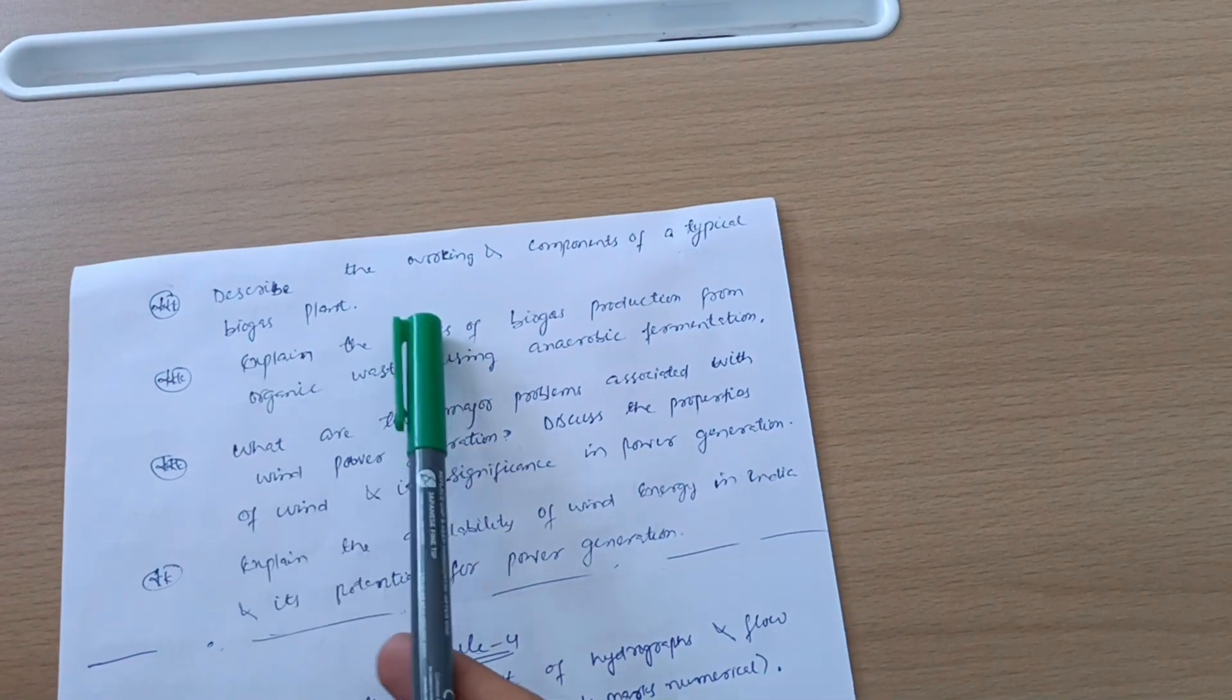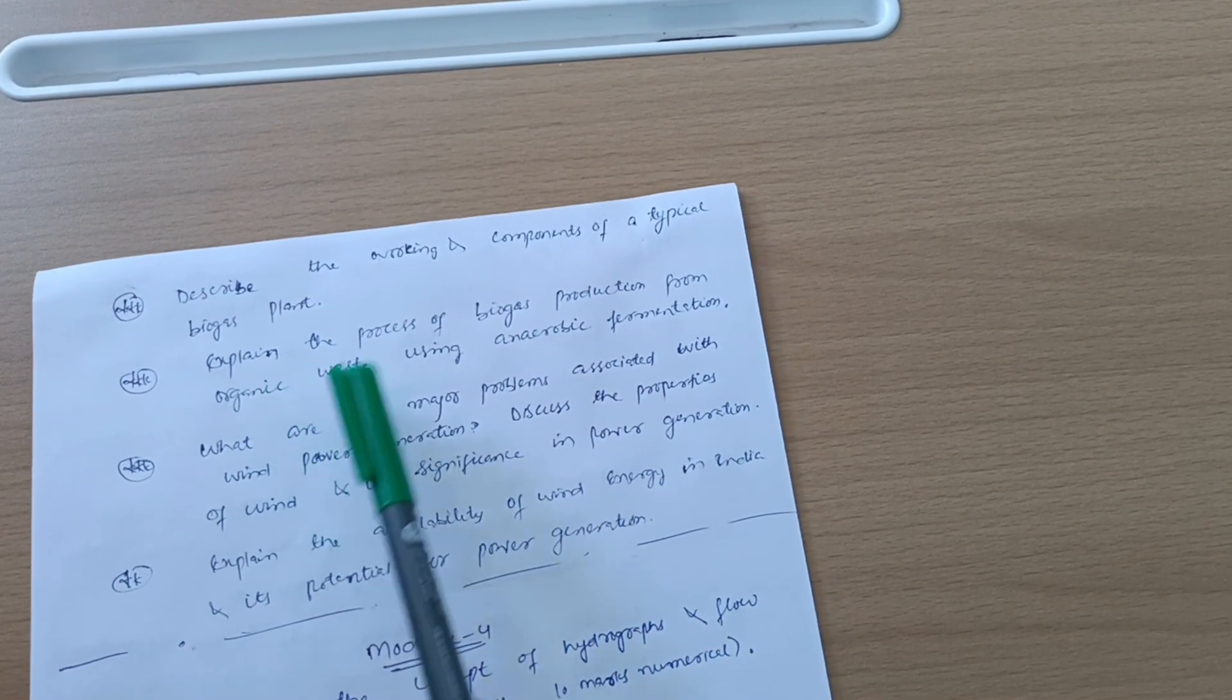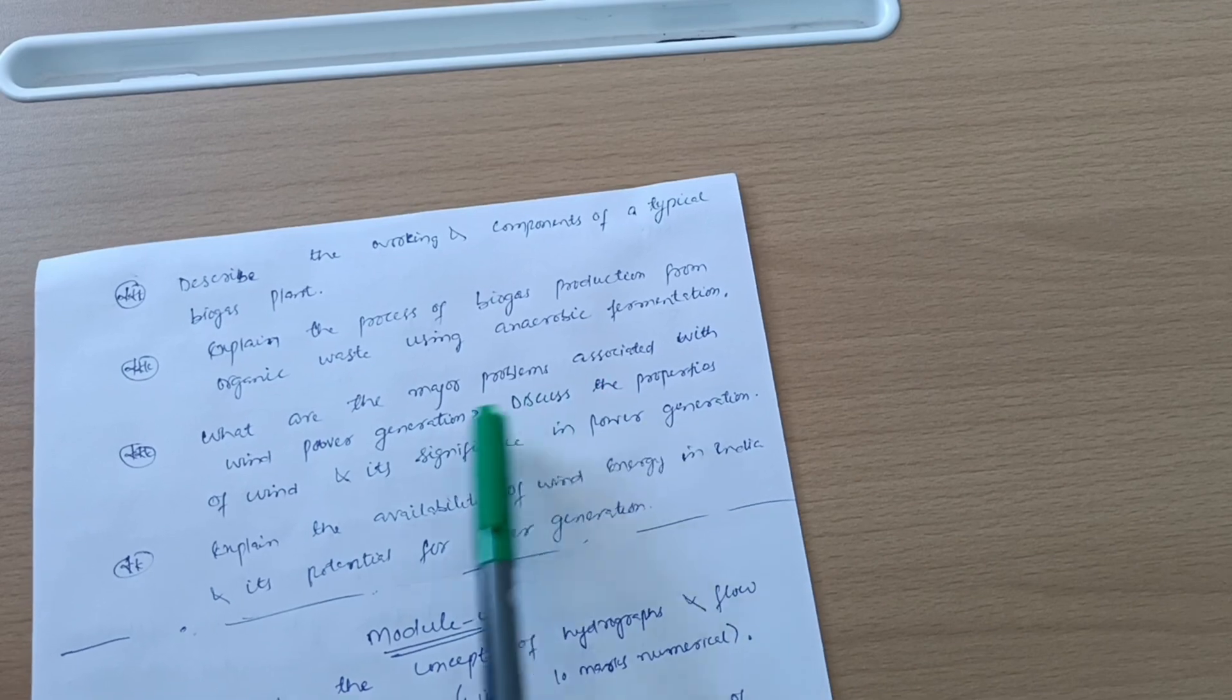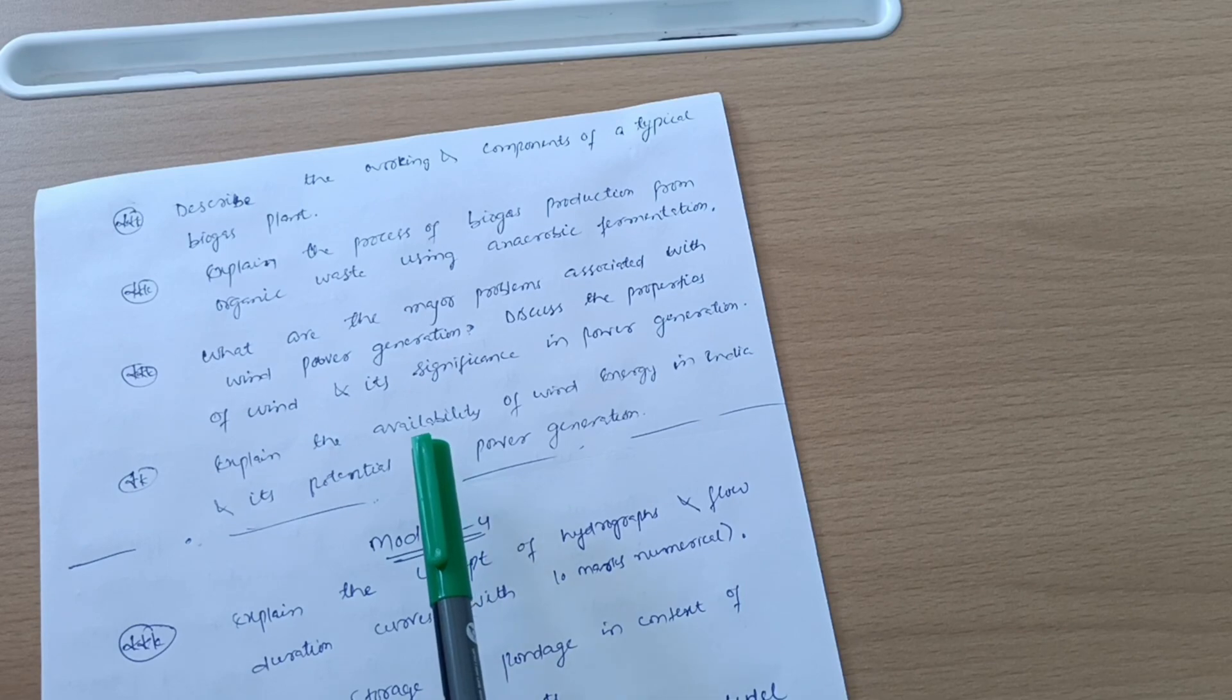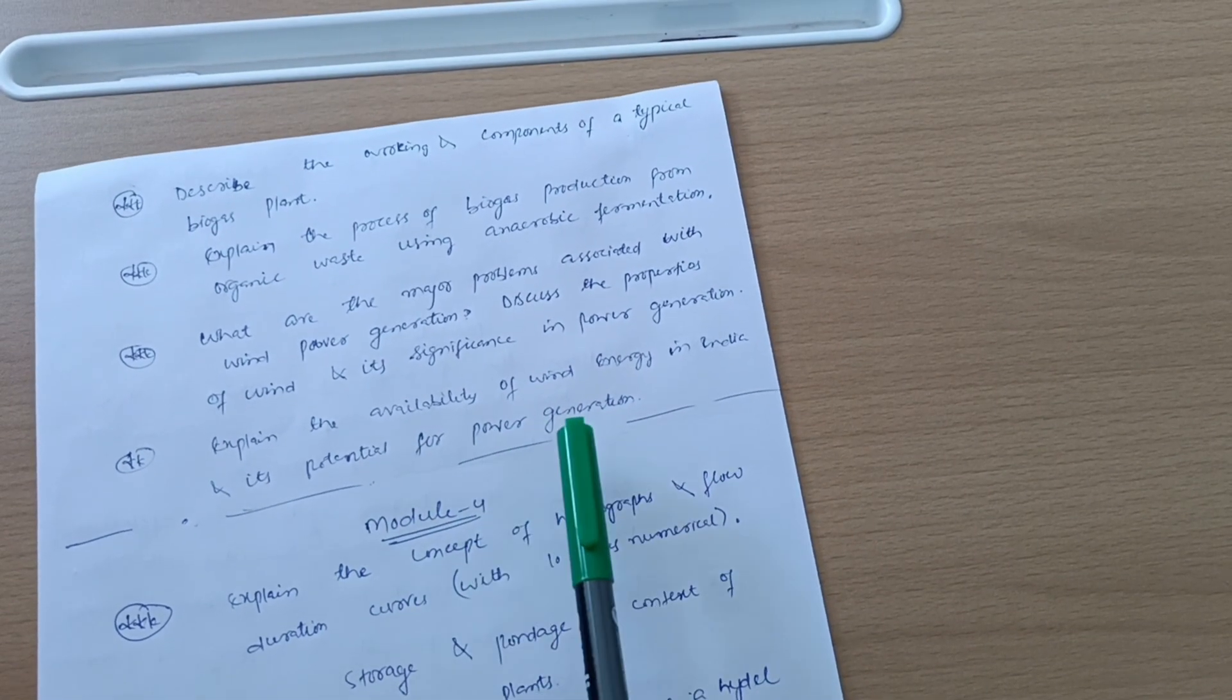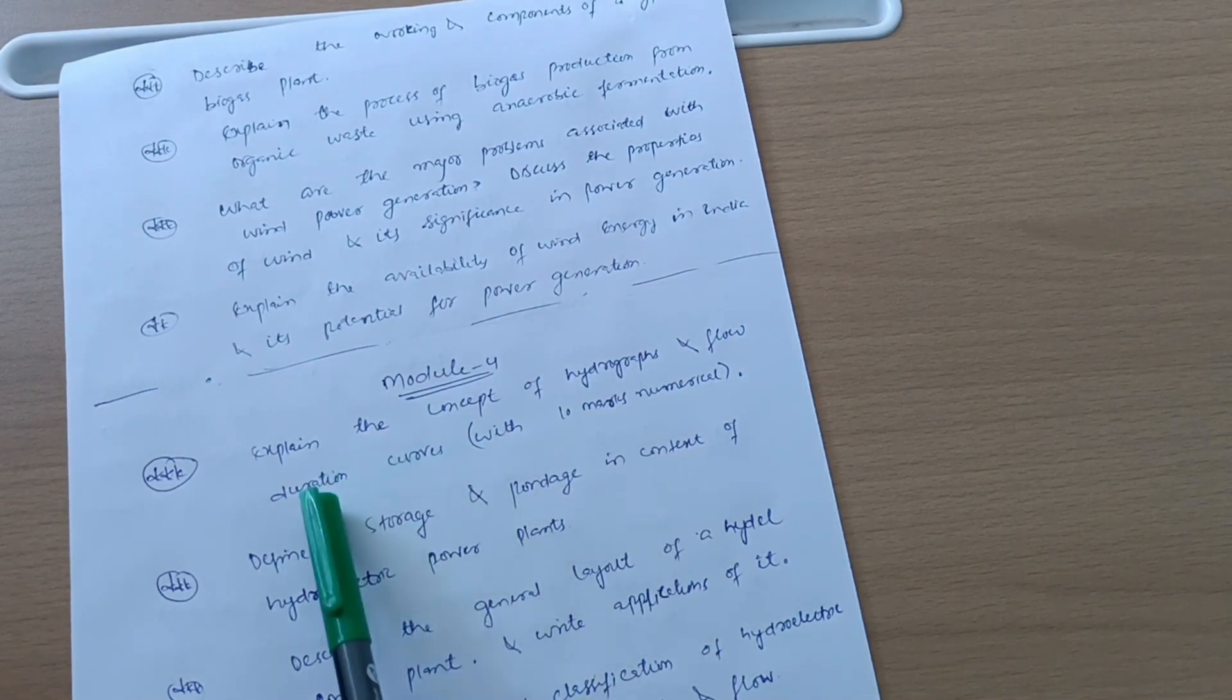Four more questions from Model Third: Describe the working and components of a typical biogas plant. Explain the process of biogas production from organic waste using anaerobic fermentation - super important question, this may be six marks. What are the major problems associated with wind power generation? Discuss the properties of wind and its significance in power generation. Explain the availability of wind energy in India and its potential for power generation.